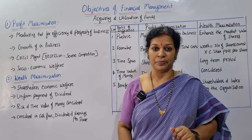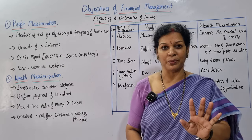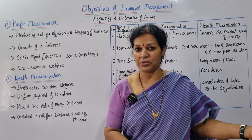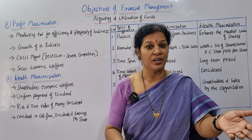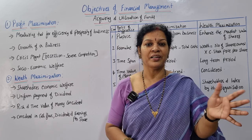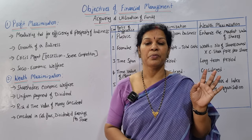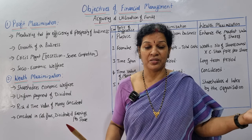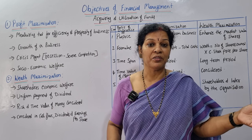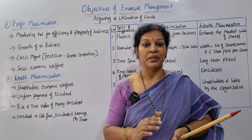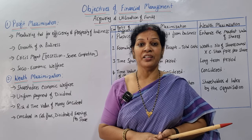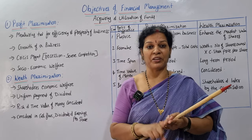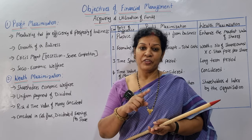Profit maximization is always temporary. You can decide whether to give profit to shareholders as dividend or reinvest it in the company, but profit is temporary. Wealth maximization, on the other hand, is about increasing the wealth of the organization in the long term, making a permanent impact on the organization's activities and stability.